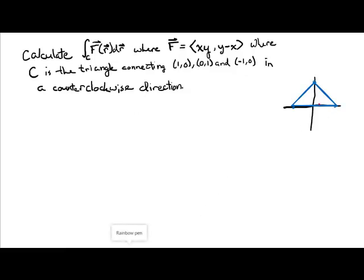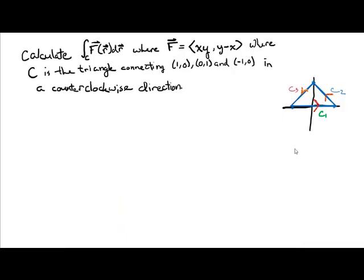Here's our triangle, and to orient this, we're going counterclockwise. In this problem, we're going to need to break this up into three separate paths: C1, C2, and C3. We're going to need parametric equations for each path, and then we'll do the integral on each path.